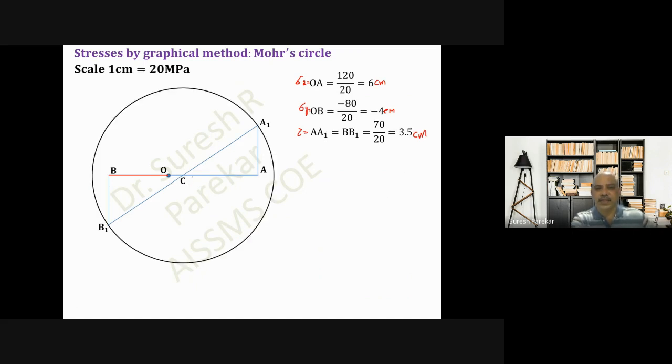Now after this circle, we have to draw 2θ, that is 110 degrees anticlockwise from this. So we will plot 2θ = 110 degrees, and this will be CP line. Then we have to drop perpendicular from P on AB, which will be PM.